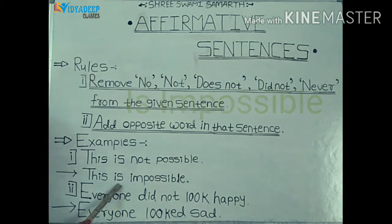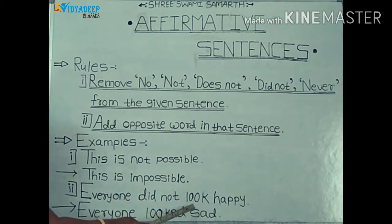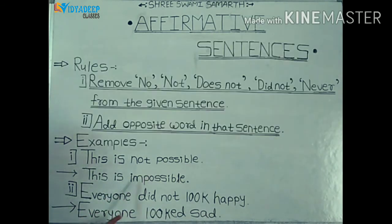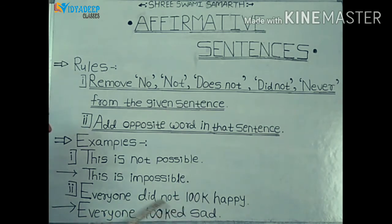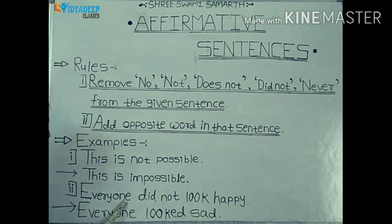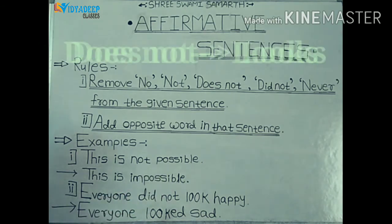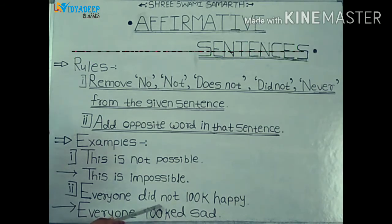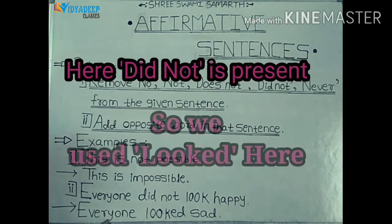So, 'This is impossible.' Now see another example: 'Everyone did not look happy.' Don't make any grammatical mistake. Here, 'did not' is present.